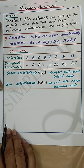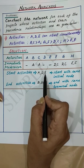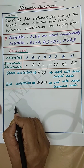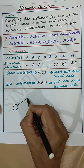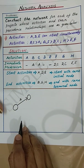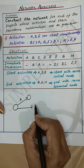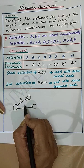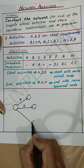Let's now draw the network diagram. Activities A, D, and E are the initial activities, so let's first draw these activities. We draw activity A, then activity D, and then activity E.